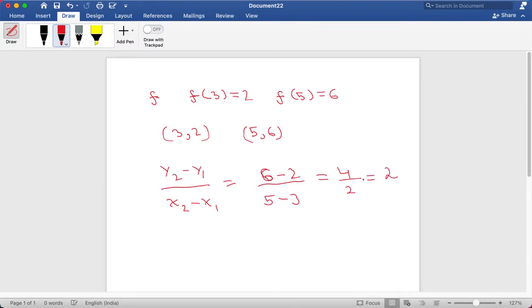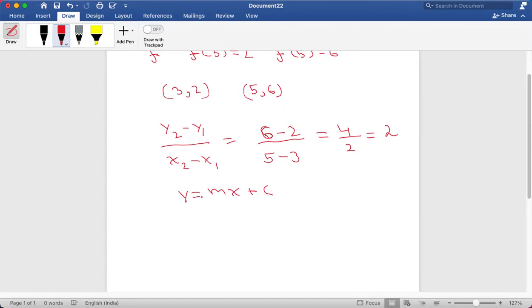So this is the slope or the gradient which we found. Now using the regular formula y equals mx plus c, in this c is the y-intercept. So now we take any of these points 3 comma 2 or 5 comma 6. So if we take 3 comma 2, the y value is 2, so we substitute it as 2. So 2 is equal to m, which is the gradient, 2 into 3 plus c. So the value of c will be 2 minus 6, which is equal to minus 4.